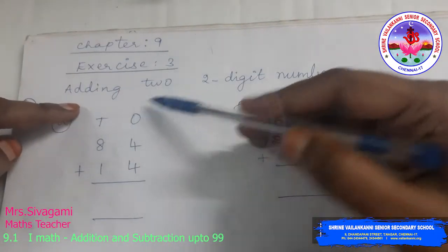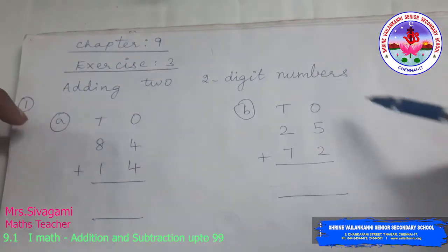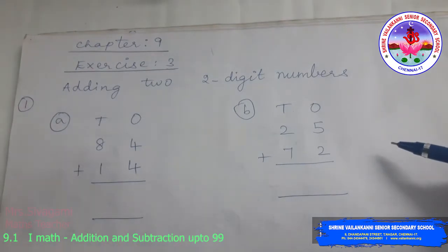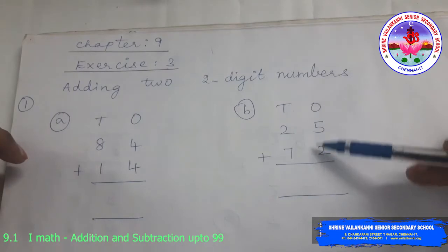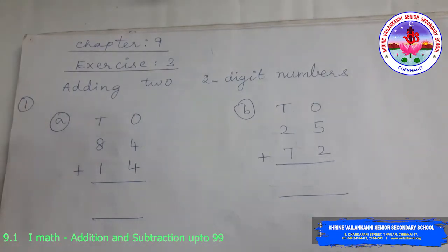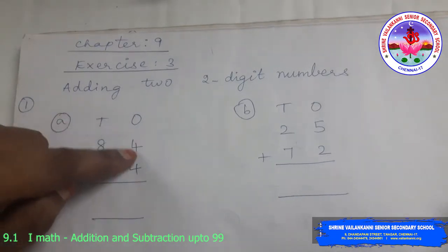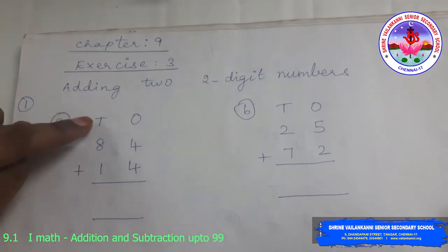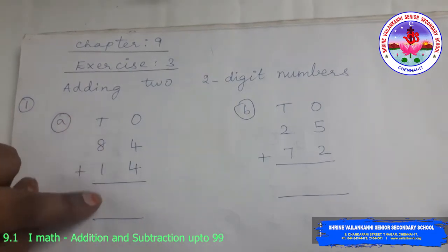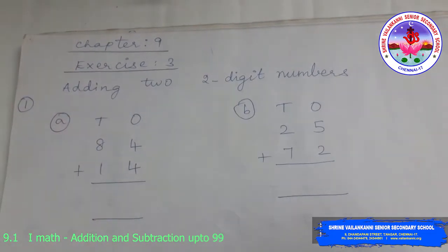Till now, we have only added a 2-digit number and a 1-digit number. Here, you are going to add two 2-digit numbers. But you are going to follow the same rule that you will add the 1s first, get the answer, then you will move to the 10s and you will add and get the answer. You will do it separately.